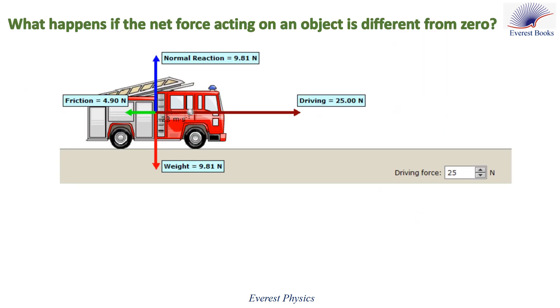What happens if the net force acting on an object is different from zero? Look at this crocodile animation. This car is acted upon by four forces. The weight of the car cancels its normal reactions since these two forces equal in magnitude but opposite in direction. The driving force or the traction force has a magnitude greater than that of the friction. And these two forces have opposite directions. So the net force acting on this car is different from zero.